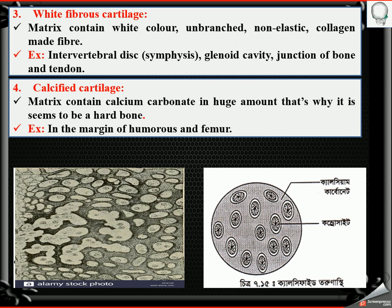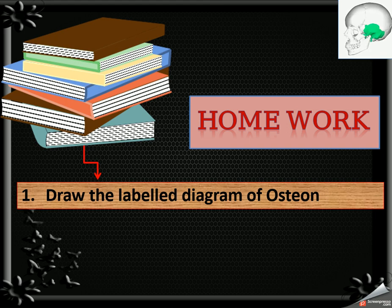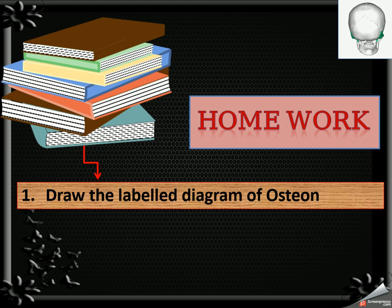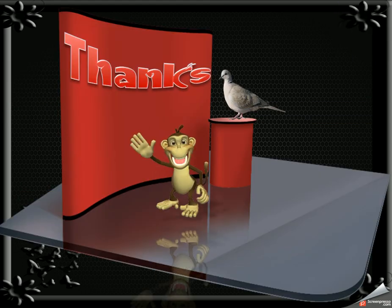So this is the detail about cartilage and bones. Today's homework is a labeled diagram of the osteon or Haversian system structure. Thanks to all. Stay home, stay fine, thanks to all.